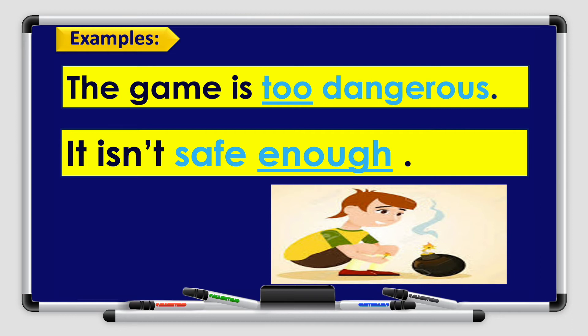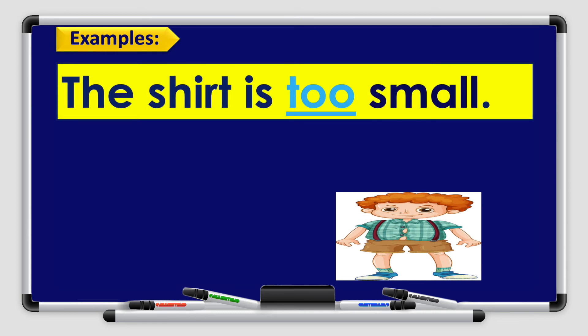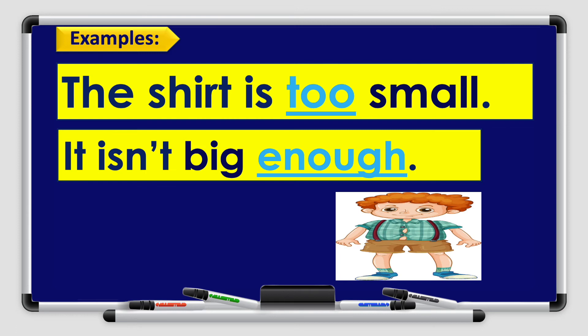Excellent boys and girls. Let's check this example: The shirt is too small — it isn't big enough. In the first sentence, the adjective 'small' comes after 'too.' In the next sentence, the adjective 'big' comes before 'enough,' and the verb 'isn't' is in negative form. Think of examples like this, boys and girls.